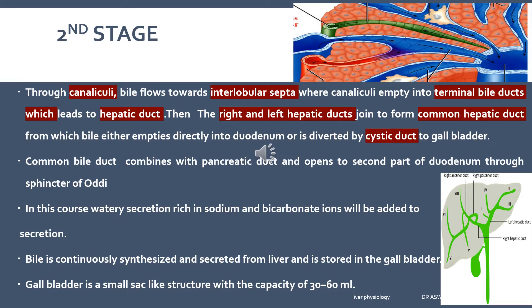Bile is continuously synthesized and secreted from the liver and stored in the gallbladder. The gallbladder is a small sac-like structure with a capacity of 30 to 60 ml that temporarily stores bile. It also concentrates bile and slightly acidifies it. There are different functions for the gallbladder that we will discuss.